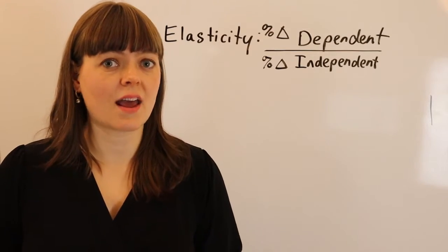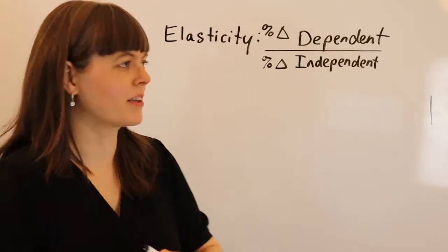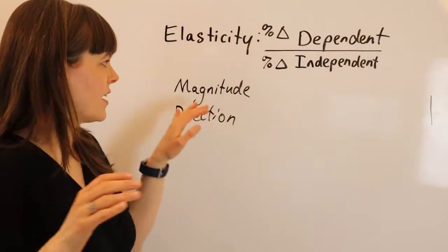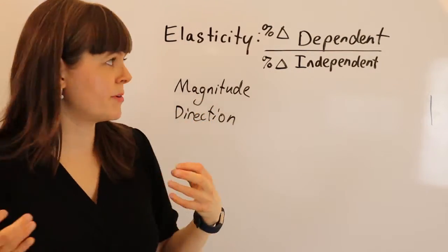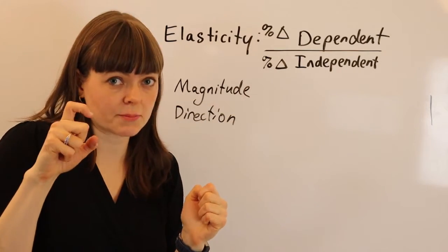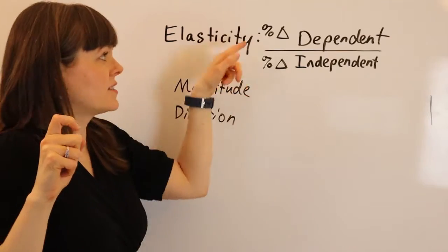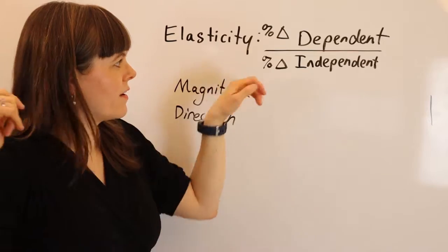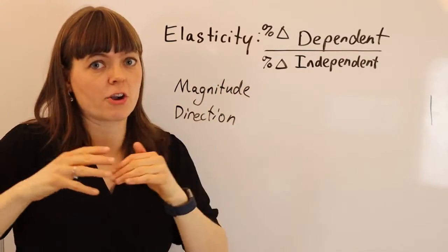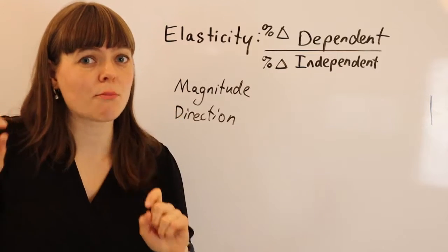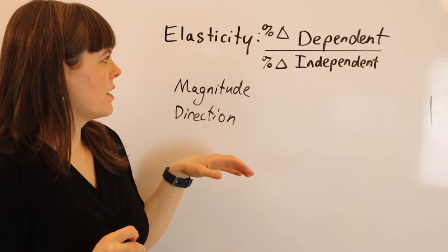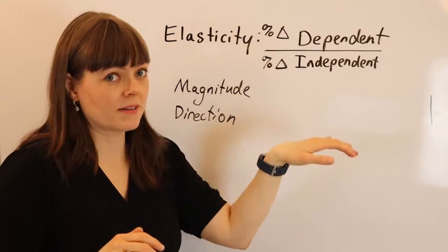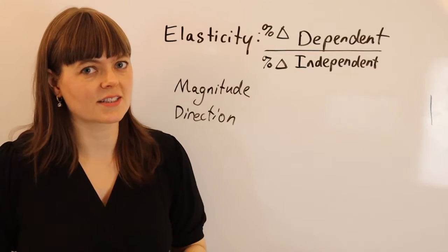Magnitude is going to tell us whether there's a really strong relationship between two variables. If the independent variable changes a little bit, is the dependent variable super responsive to that change? Or is it the reverse — we change the independent variable a whole lot and only get a very small change in the dependent variable? That's going to be associated with a small elasticity, whereas a huge response is going to be associated with a large elasticity in magnitude.